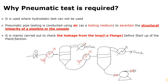First of all, where do we use the pneumatic test? Actually, it is used where hydrostatic test cannot be used. There is a hydrostatic test and there is a pneumatic test. We use these tests to find out whether there is any leakage or not within our pipeline or within the loop.